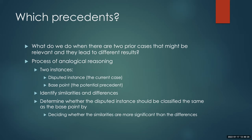The basic process of analogical reasoning is this: you have two instances. You have a disputed instance — which is the current case, the current dispute — and then you have a base point, which is the potential precedent. You look for similarities and differences between the two cases. And then by weighing and evaluating these similarities and differences, you decide whether the disputed instance should be classified in the same way as the base point — whether the precedent should be followed. You have to decide whether the similarities are more significant than the differences.